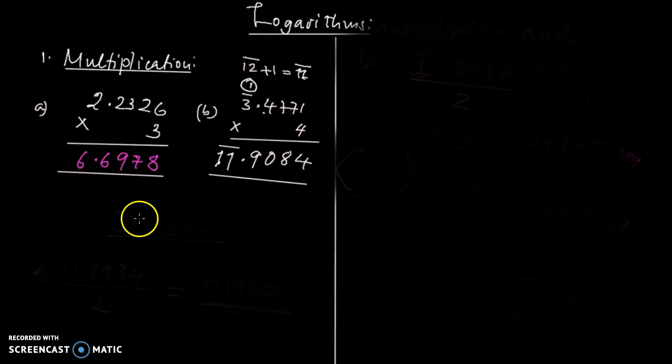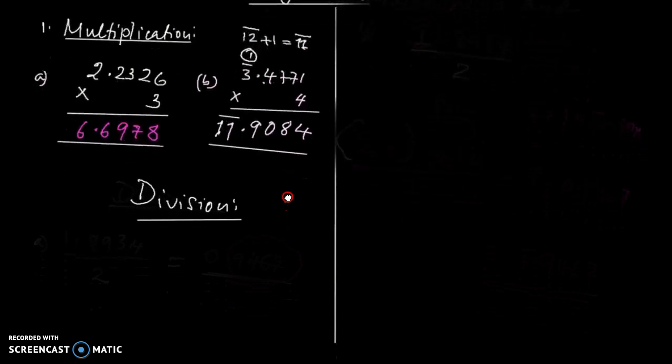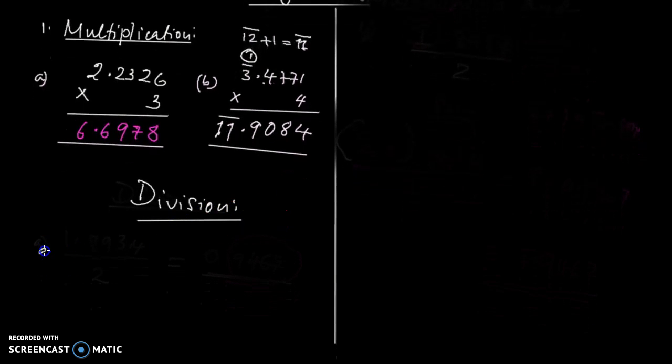Now let us move to division of logarithms. We are going to discuss two cases of division. The first case is when the given logarithm is all positive. For example, 1.8934 divided by 2—the characteristic is positive and the mantissa is also positive.